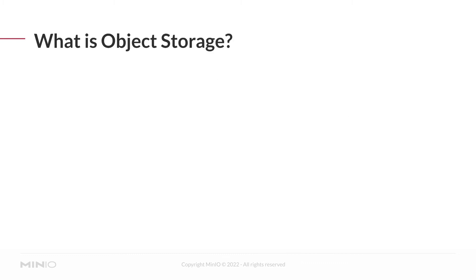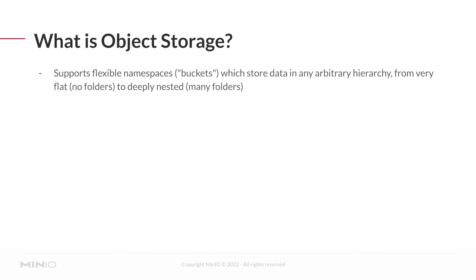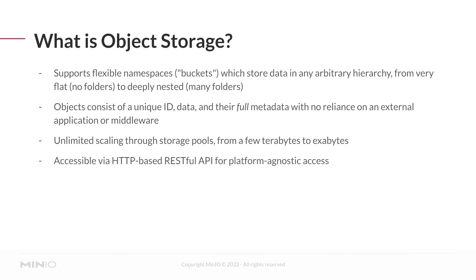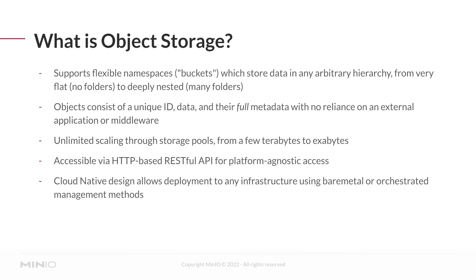So what is object storage? It's easiest to talk about it in terms of its attributes. Object storage must support flexible namespaces or buckets that store data in any arbitrary hierarchy, whether very flat with no subfolders or deeply nested with many subfolders. The objects stored must consist of a unique ID, the actual object data, and full metadata, with no reliance on an external application or middleware to tie them together. There should be unlimited scaling through technologies like storage pools — from a few terabytes to exabytes. You should have access to an HTTP-based RESTful API for platform-agnostic access without proprietary libraries. And object storage should be cloud native, allowing deployment to any infrastructure, whether bare metal or orchestrated.